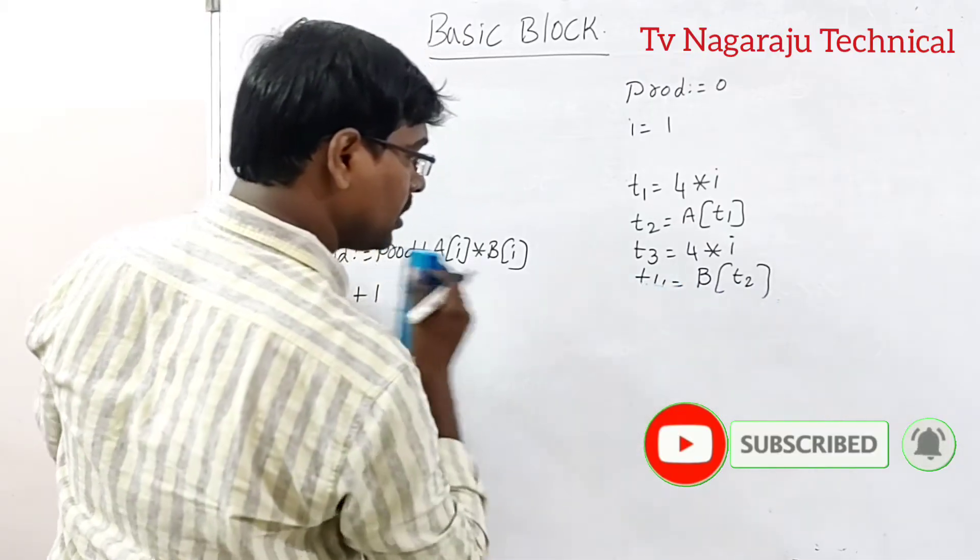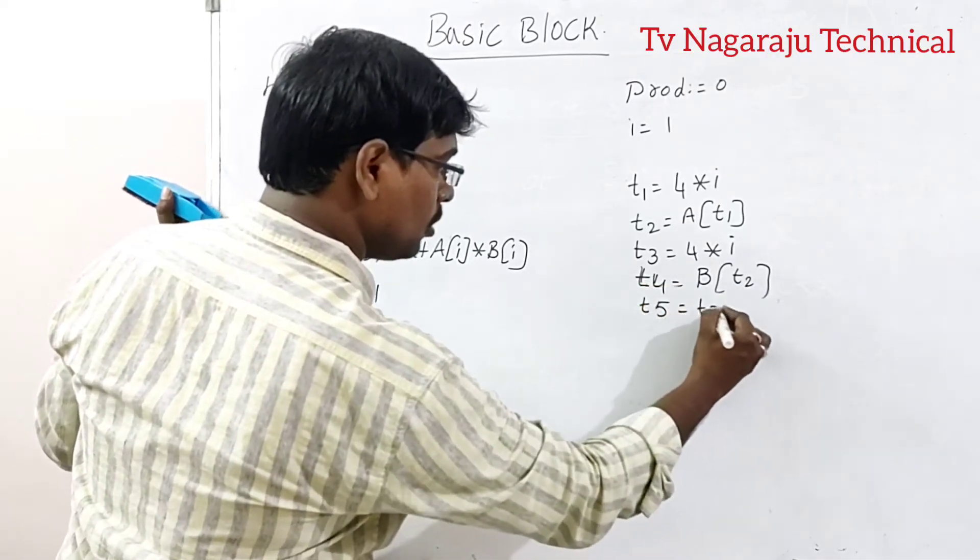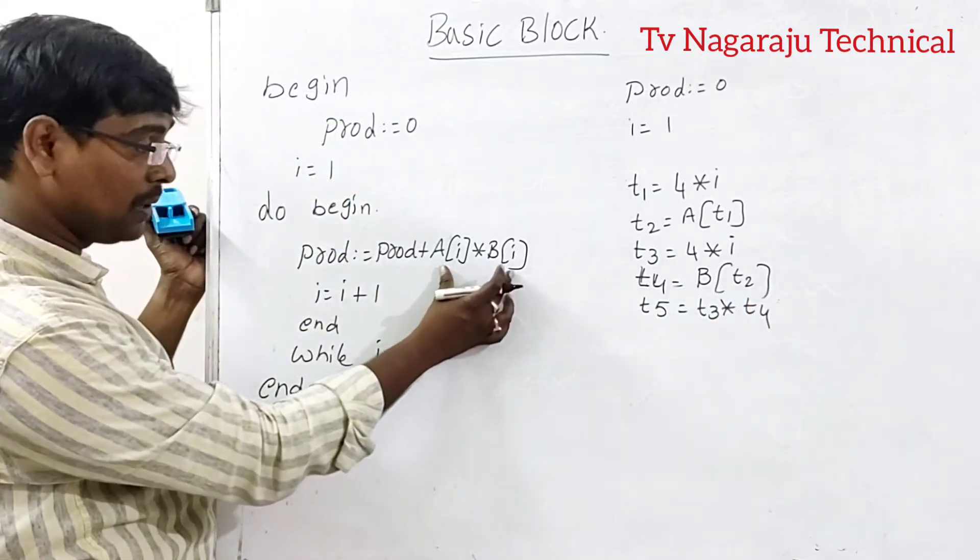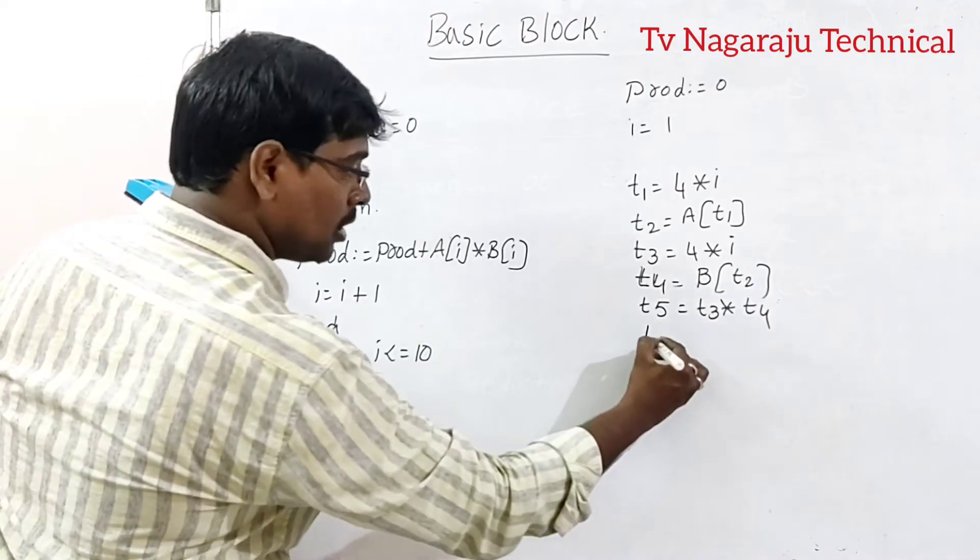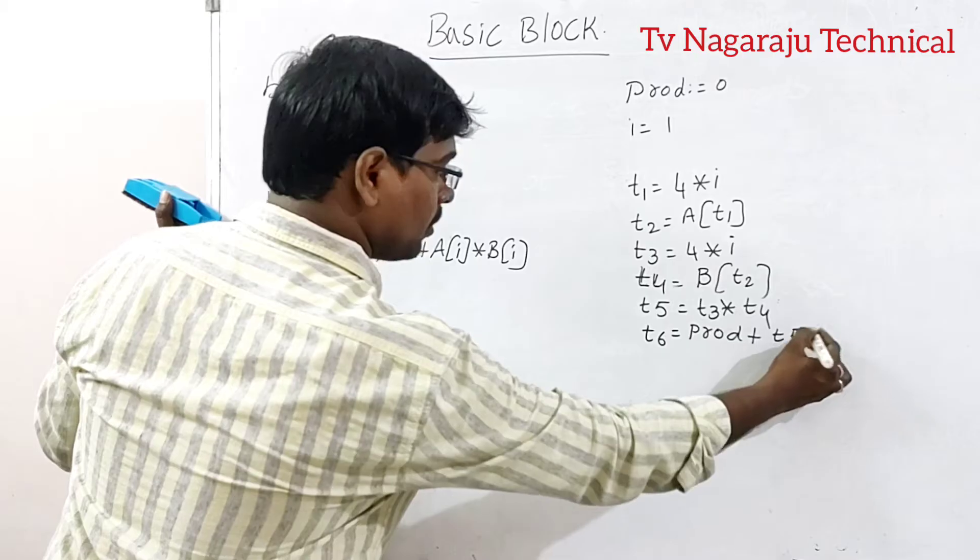Sorry, before that one, you need to do multiplication. T5 is equal to T3 into T4. This thing is completed. Now addition. So T6 is equal to product plus T5.